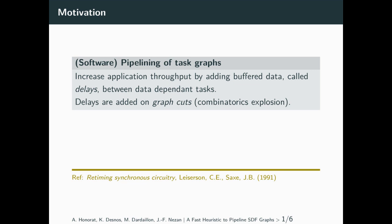First, what is pipelining? It is an optimization to increase the throughput of an application. It adds extra buffered data, called delays, on specific locations of the application task graph, called graph cuts. Depending on the task graph, there might be a tremendous amount of such graph cuts.